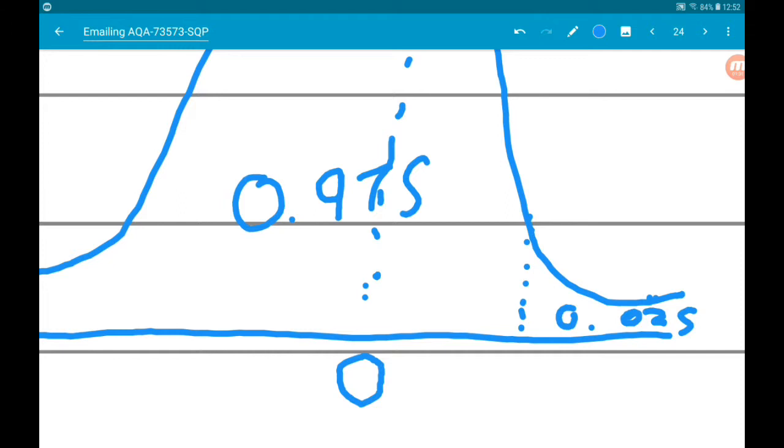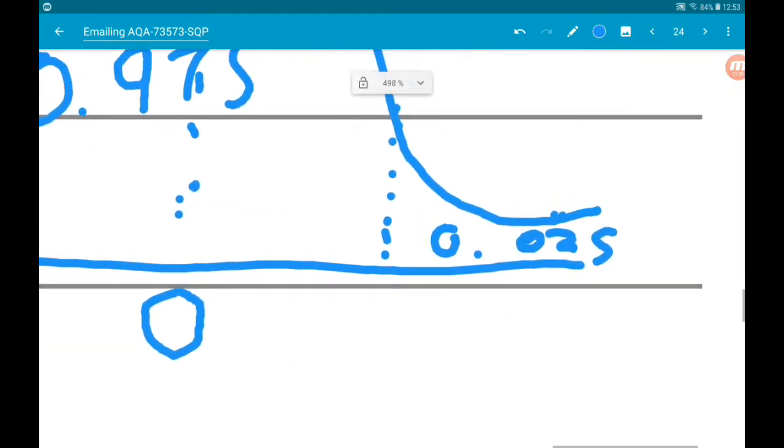So we can use the inverse normal distribution on our calculators. So get into distribution, inverse normal. Now we want the area to be 0.975. Our variance, sorry, standard deviation sigma is 1 and our mean is 0. If we do that, then we will get 1.96.